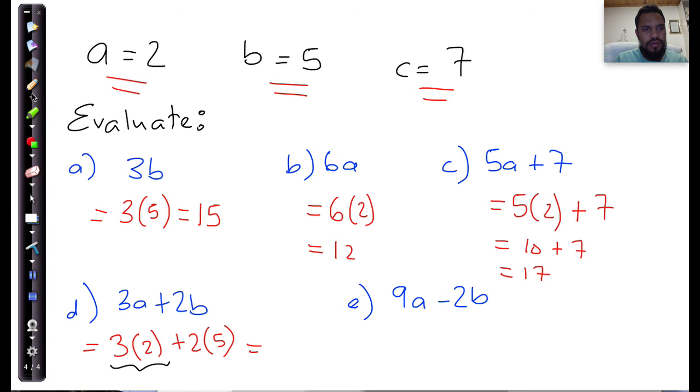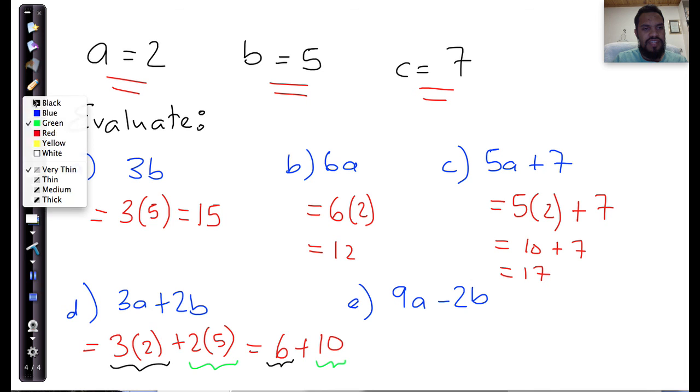The first part is equal to 3 multiplied by 2, which is 6, plus 2 multiplied by 5, which is equal to 10. So as you can see, the 3 times 2, this part, and this part is equivalent. And if I look at this part, 2 times 5, and that part, that's equivalent. So that's going to give me a final answer of 16.